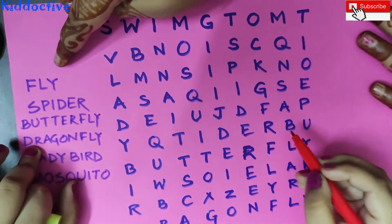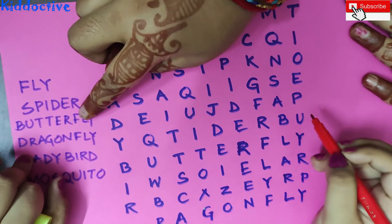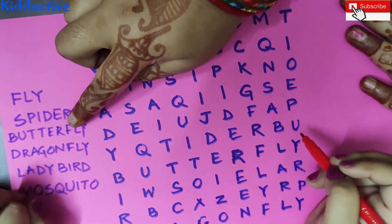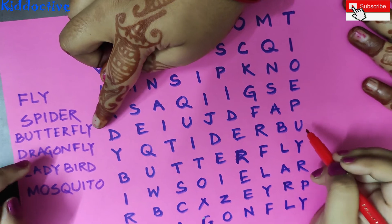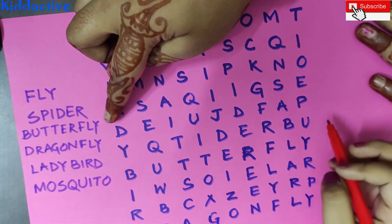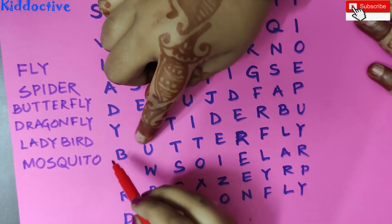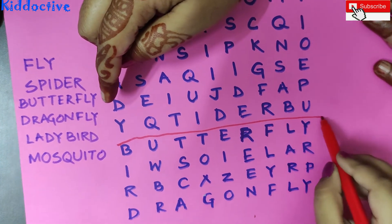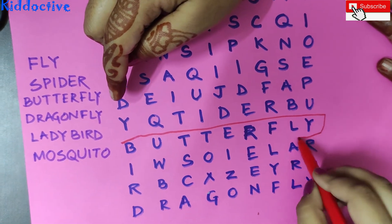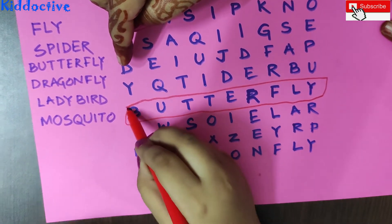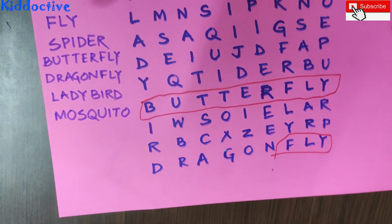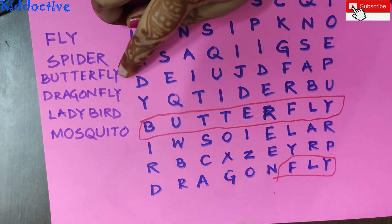What is the next one? Butterfly. You got a butterfly? Yes. Butterfly is the spelling: B-U-T-T-E-R-F-L-Y. Very good. Very nice. So fly is in butterfly.